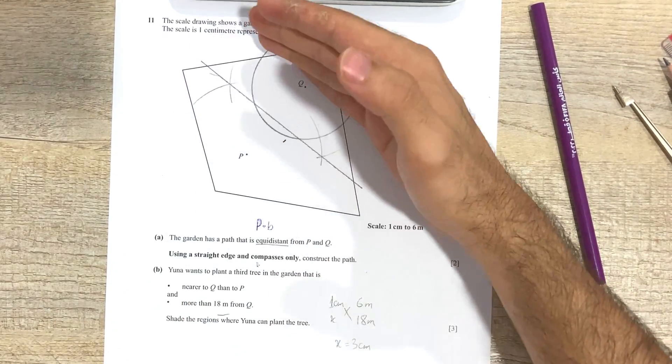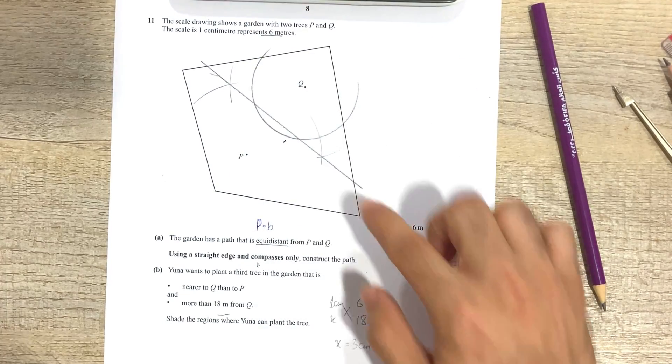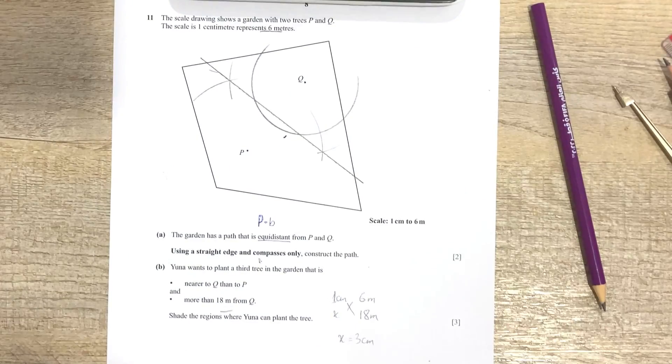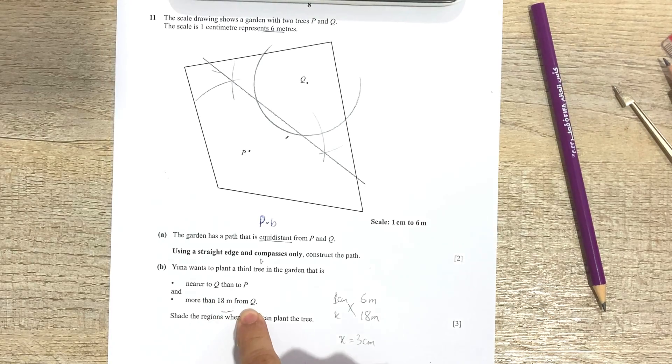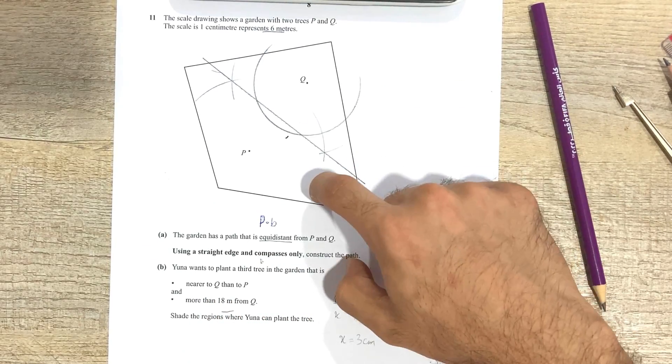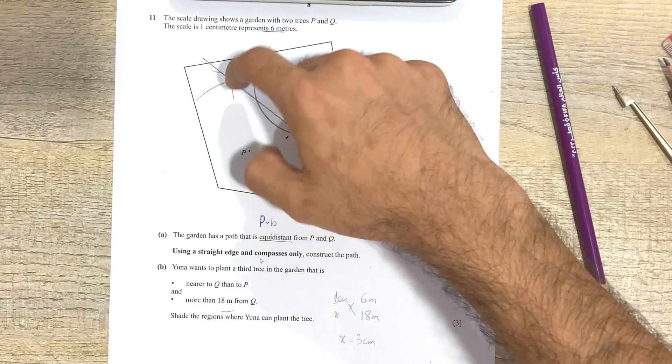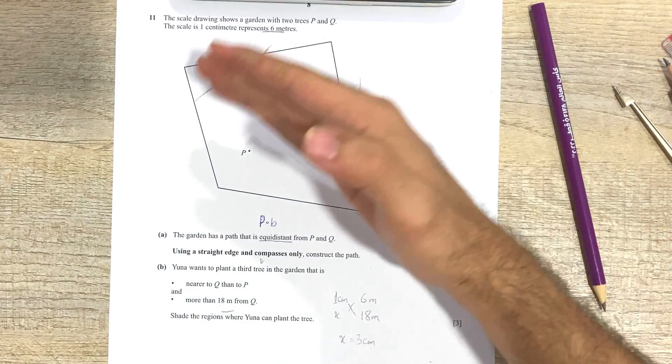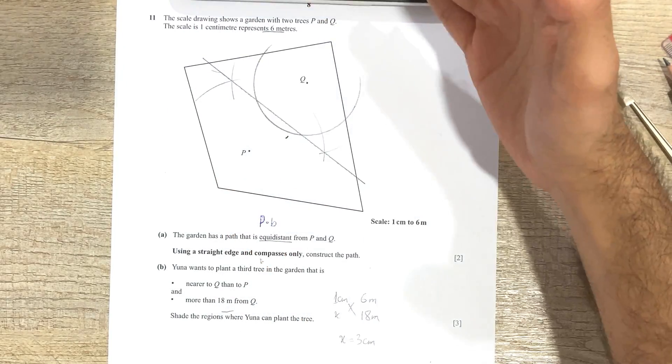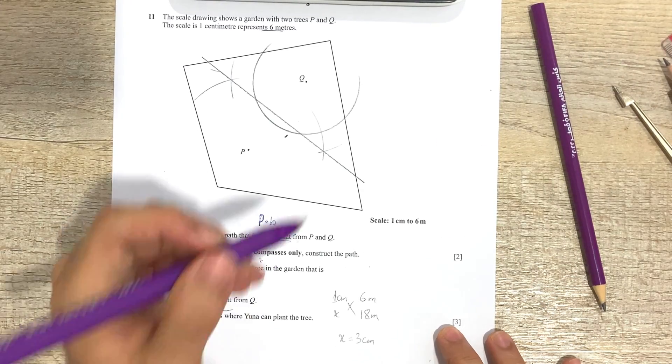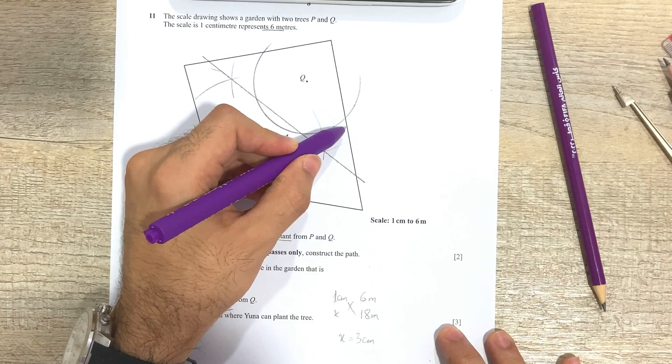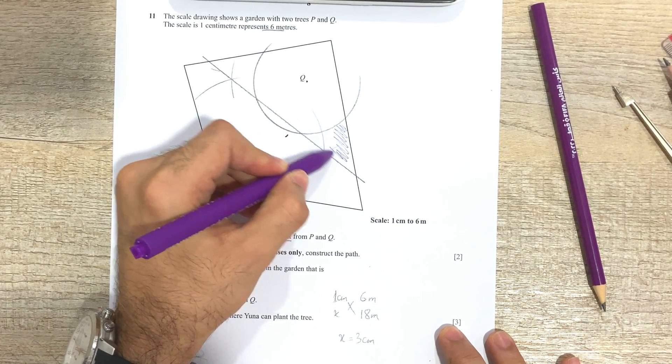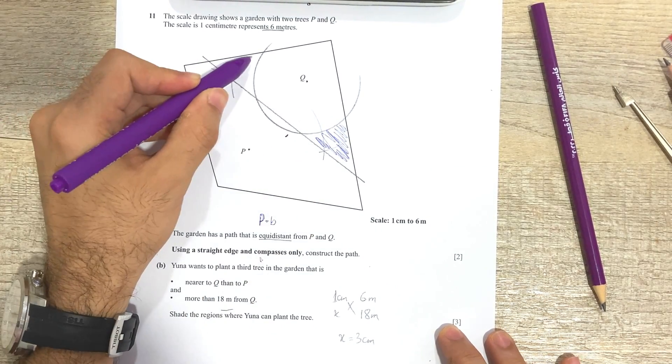So it says nearer to Q than to P, so that means it has to be on this side of the perpendicular bisector, the side that's nearer to Q. And then it also says more than 18 meters from Q, so that means it has to be outside this arc, but you can sort of say that above, this way, above the perpendicular bisector.